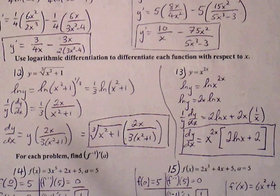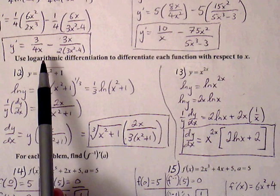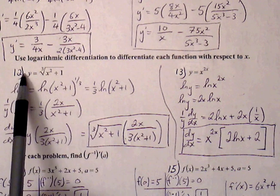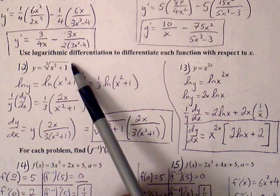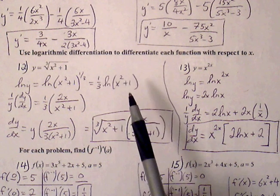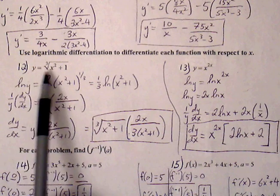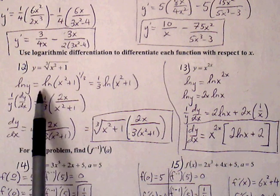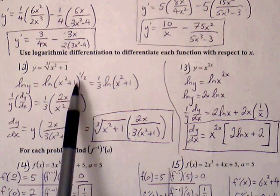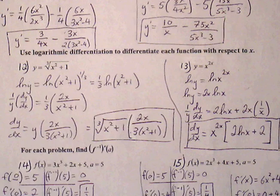Number twelve: use logarithmic differentiation to differentiate each function with respect to x. With log differentiation, we introduce logs into a problem that initially does not have them. You only do log differentiation if there are no logs in the problem to begin with — if there are already logs, you don't add another. Here there are no logs, so we take the natural log of both sides: ln y equals one-third ln(x² + 1), bringing the exponent down to the front.